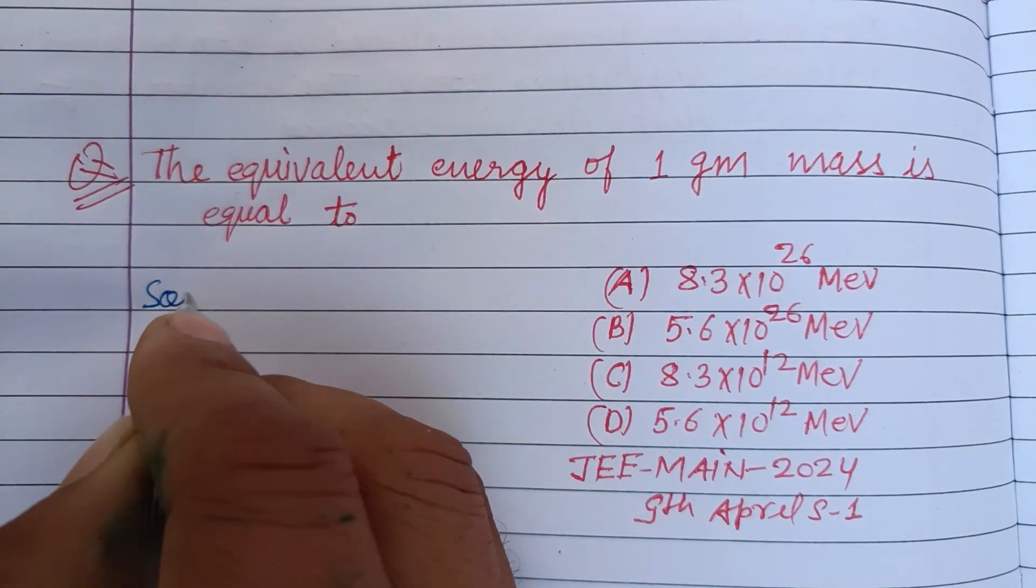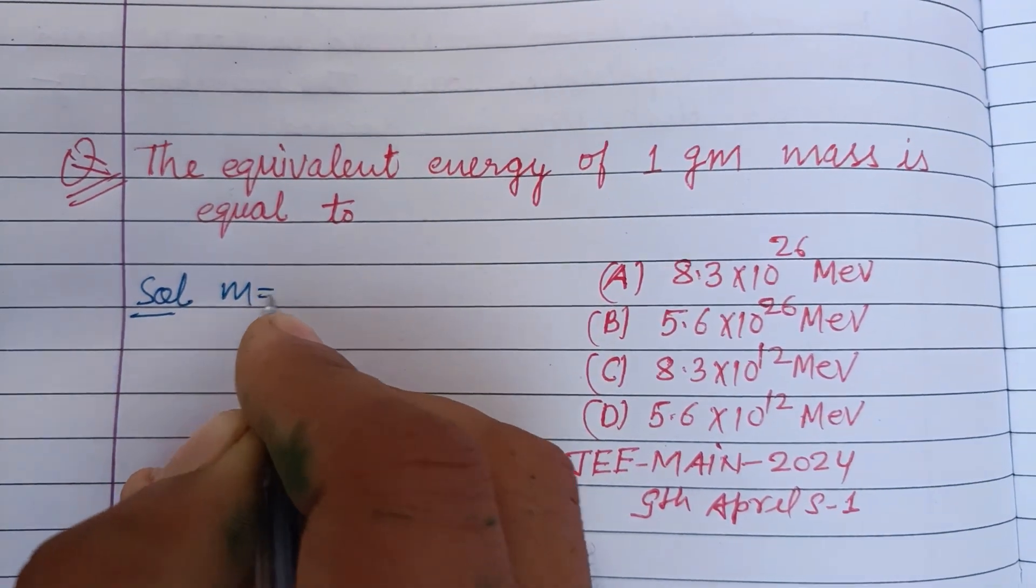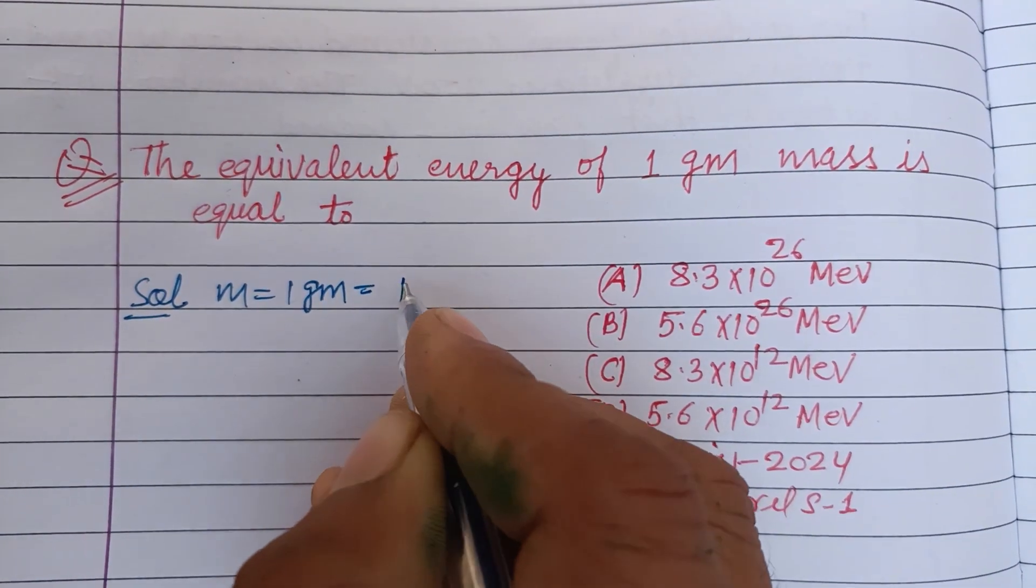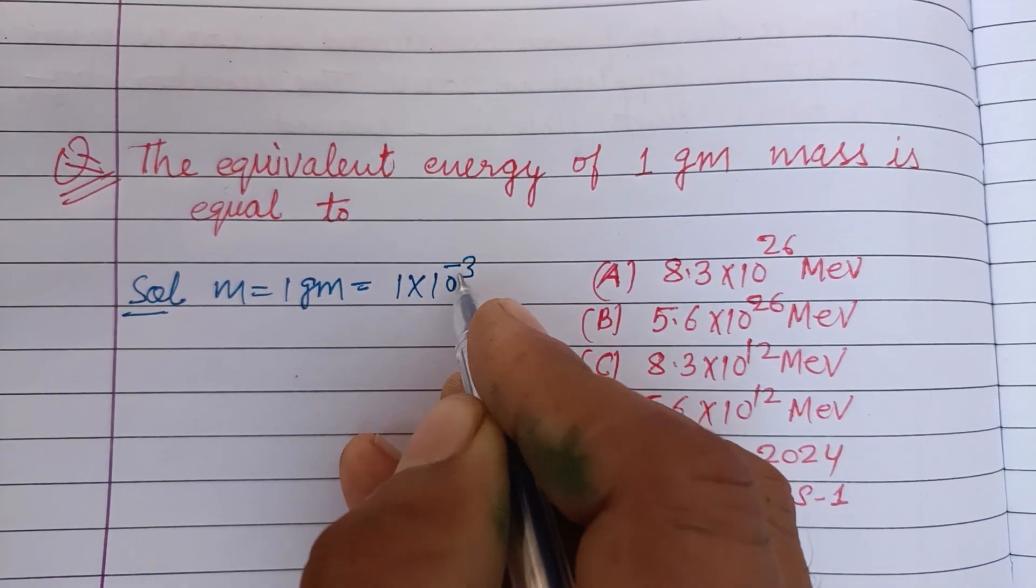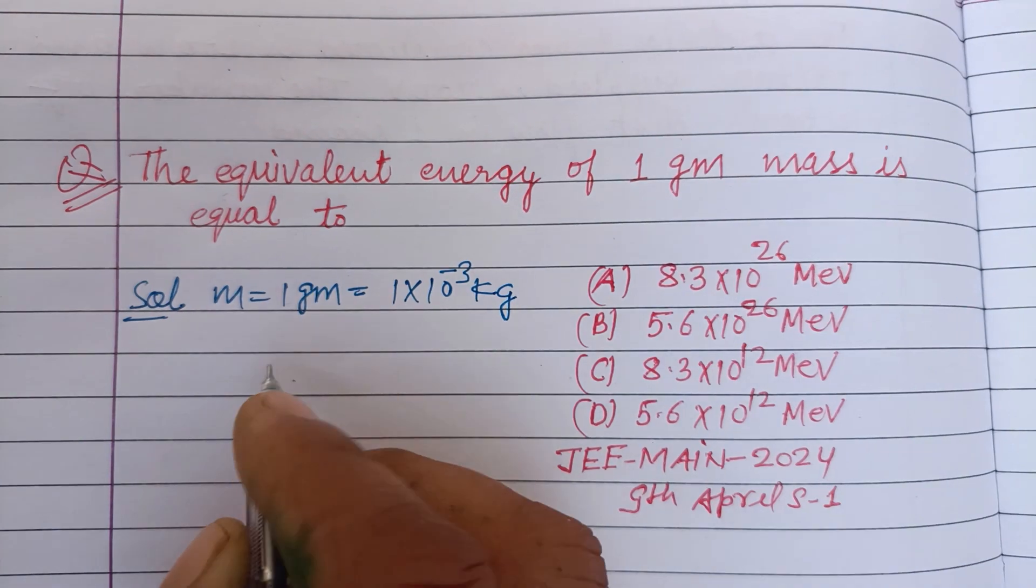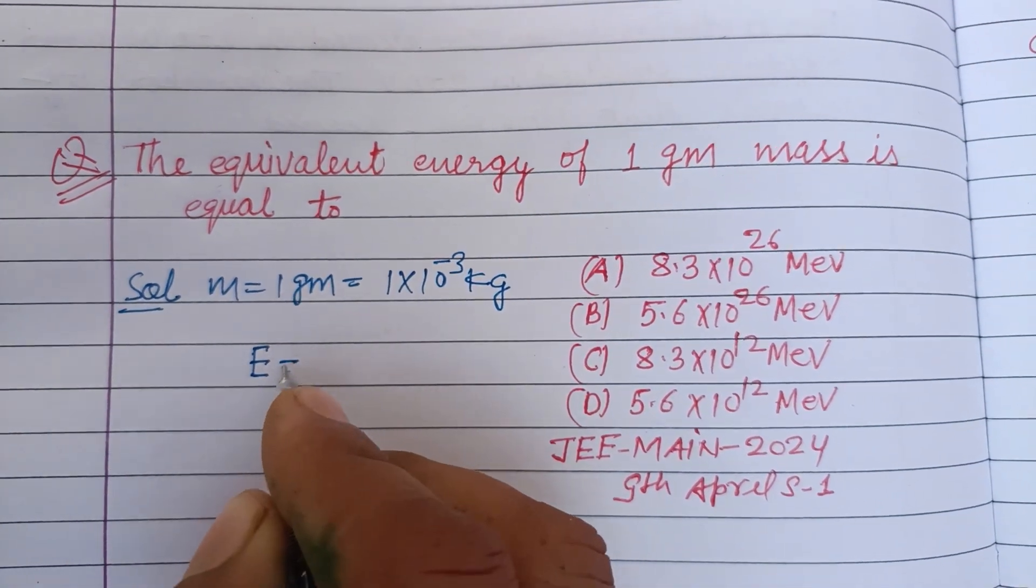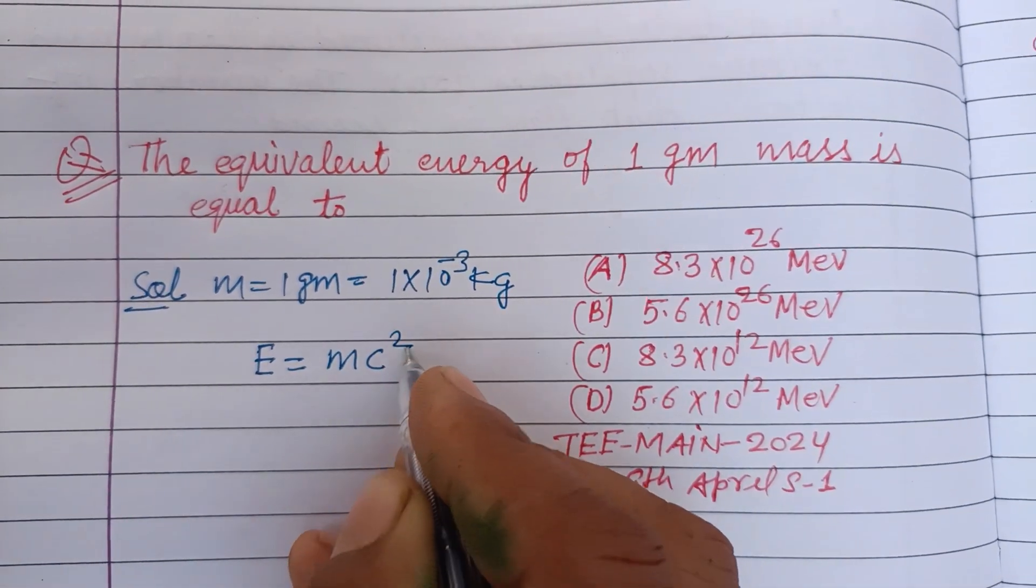Students, here mass is given to us as 1 gram, which can be changed to kilogram: 1 into 10 to the power minus 3 kilogram. By Einstein's mass-energy relationship, E equals mc squared.